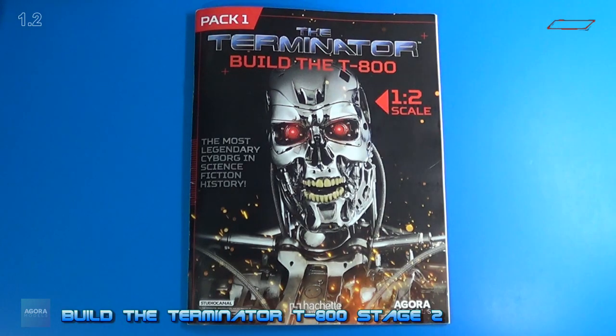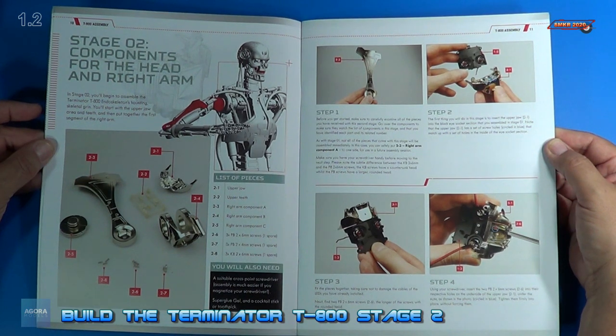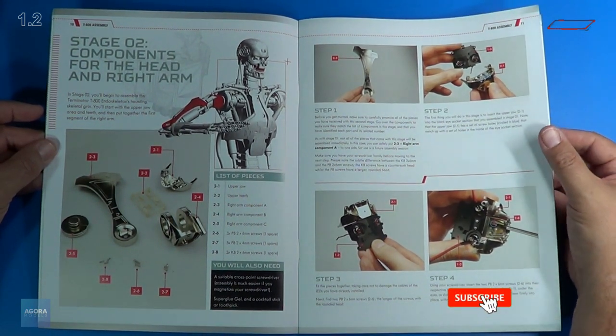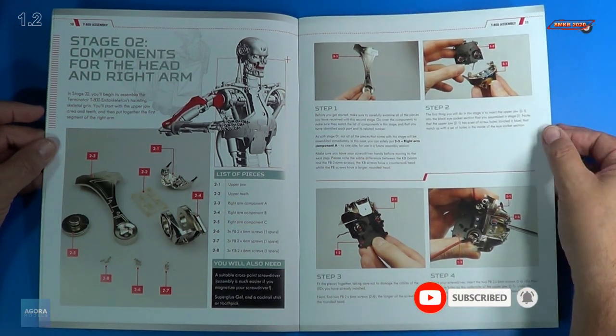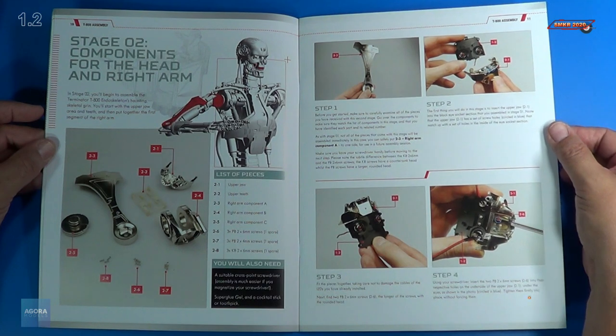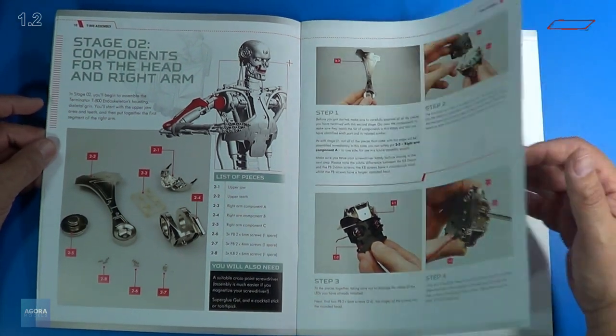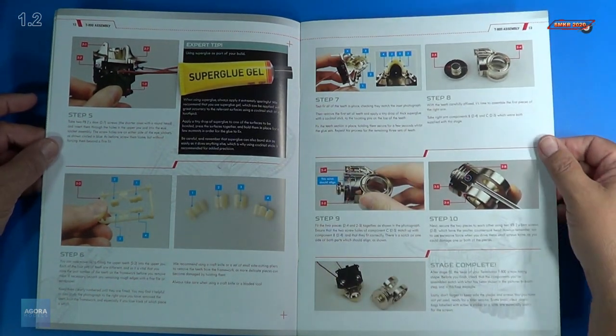Welcome back. Let's look at the instructions for stage two. Here are the instructions for stage two, and it looks like we start assembling the components for the head and right arm. So we'll continue on with what we left off on stage one. We have four steps on the right side there, along with a total of ten steps in this build.